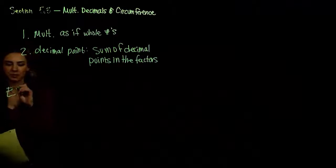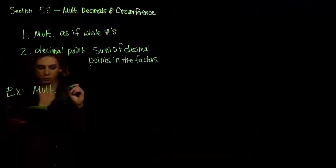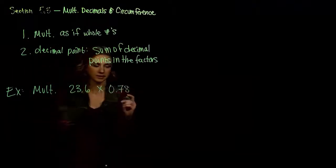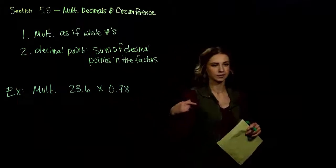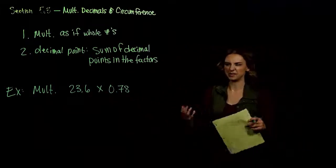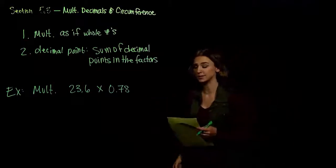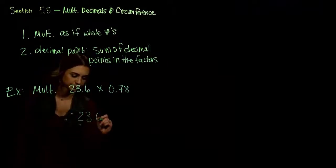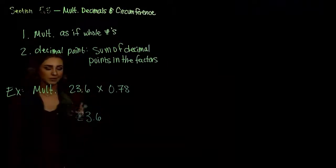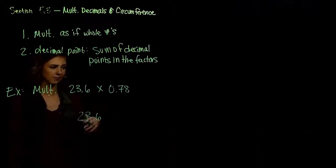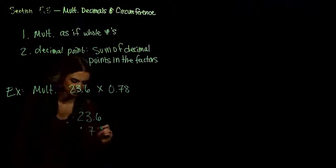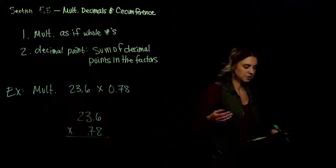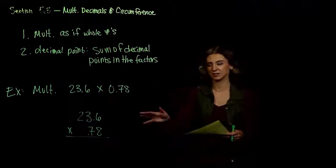So let's take an example. We want to multiply these two decimals: 23.6 times 0.78. I'm not particular if you put a zero on the front when it is a small number — it's good practice, but I'm not going to fault you if you don't. So what happens? We behave just as normal, we're going to stack them as if they're whole numbers. We pretend that 23.6 is 236 and 0.78 is just 78. Let's make note of how many decimal places each factor has.